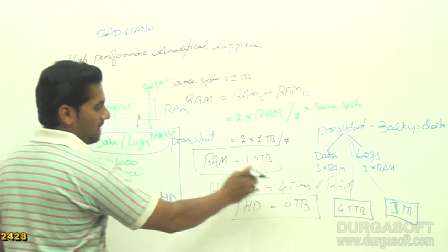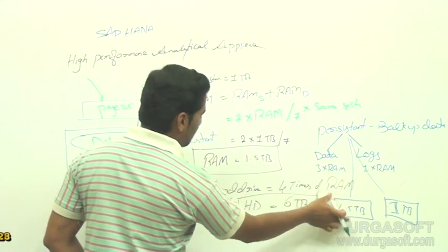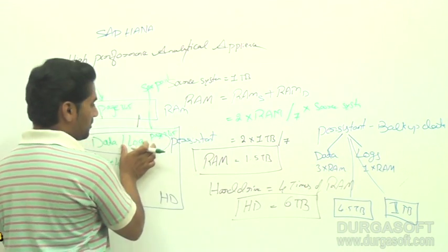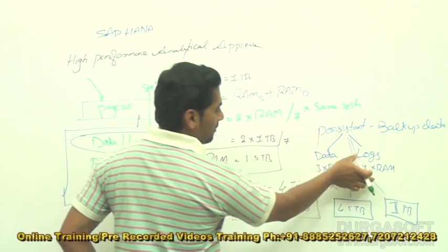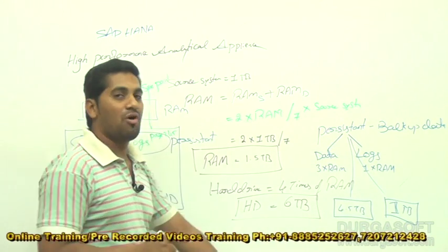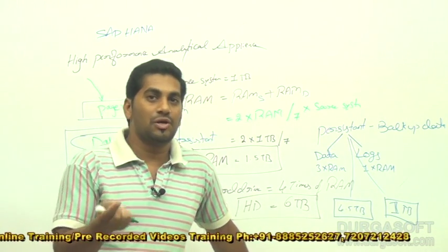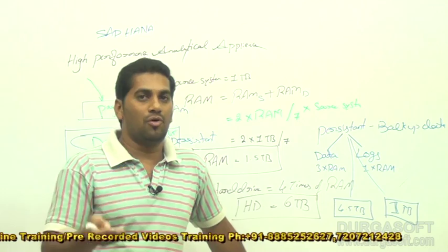For data we maintain around 3 types of RAM, and for logs we maintain around 1 type of log. These logs are 2 types: one is redo logs, and one is undo logs.